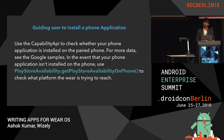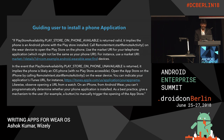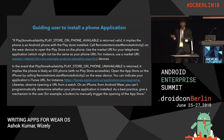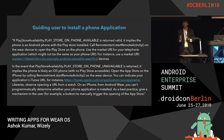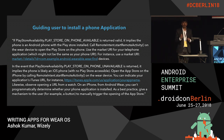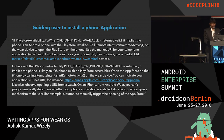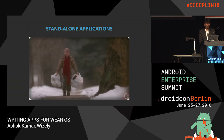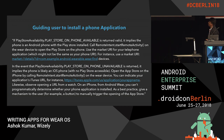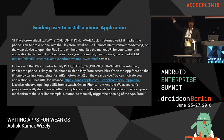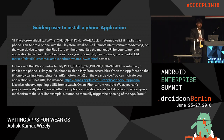We can ask the user to install the mobile phone app through the Play Store availability class, which has a method called getPlayStoreAvailabilityOnPhone. If that returns true, we know it's an Android phone because Play Store exists. If it returns false, it must be an iPhone — and then we can start the equivalent iTunes or iPhone app via an intent call.